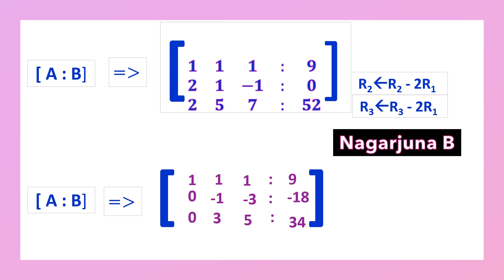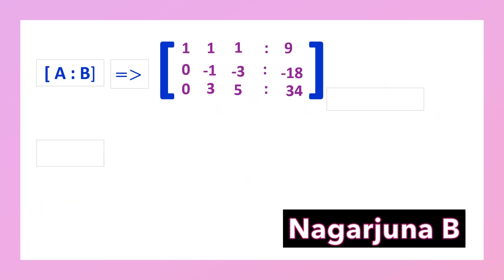This completes the first step of Gauss elimination, using element a11 (not equal to 0) to make elements a21 and a31 become zero by row elimination. After the first step, we have the augmented matrix. Now we apply the second step, which uses a22 to make a32 become zero.